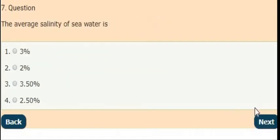Next question: What is the average salinity of seawater? Correct answer is option 3. The average salinity of seawater is 3.50%.